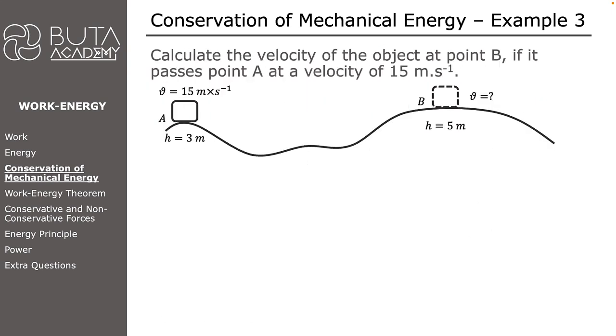The last question is the tricky one because we have to determine the object's velocity at point B without knowing its mass. As a result, we sometimes complain that the question is wrong or that certain details are missing. Let's see if this is the case.